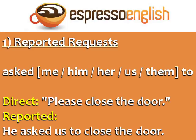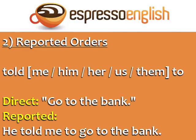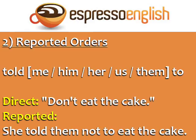For reported orders or commands, use the structure: told me, him, her, us, or them to. For example — Direct: 'Go to the bank.' Reported: 'He told me to go to the bank.' Direct: 'Don't eat the cake.' Reported: 'She told them not to eat the cake.' Again, in reported orders, the main verb does not change its form from the direct to the reported statement.